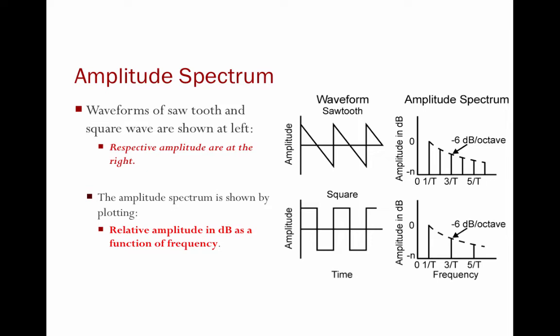We have the waveform for the sawtooth and the square wave, and then we have their amplitude spectrums on the right. From the waveforms, we can't determine the frequencies, the amplitudes, or the phases — but we'll talk about phase spectrum in a few minutes. A spectrum is amplitude as a function of frequency. In the example of the sawtooth wave, each one of those lines on the spectrum represents one of the harmonics that compose the sawtooth wave.